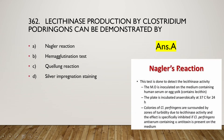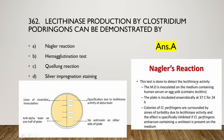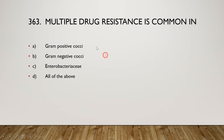The Nagler reaction detects lecithinase activity. The microorganism is inoculated on medium containing human serum or egg yolk containing lecithin. The plate is incubated anaerobically at 37°C for 24 hours. Colonies of Clostridium perfringens are surrounded by zones of turbidity due to lecithinase activity. The effect is specifically inhibited if anti-serum containing alpha antitoxin is present, showing turbidity only where no antitoxin is present.